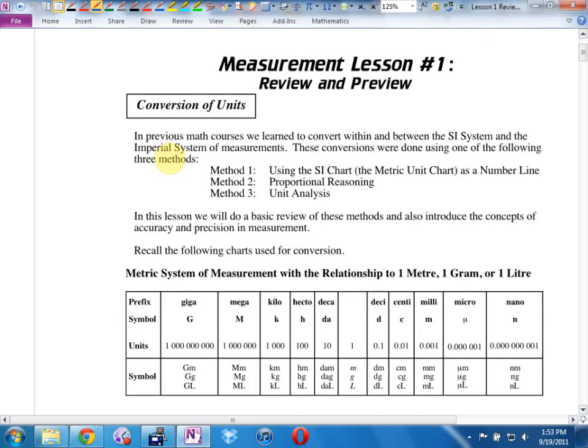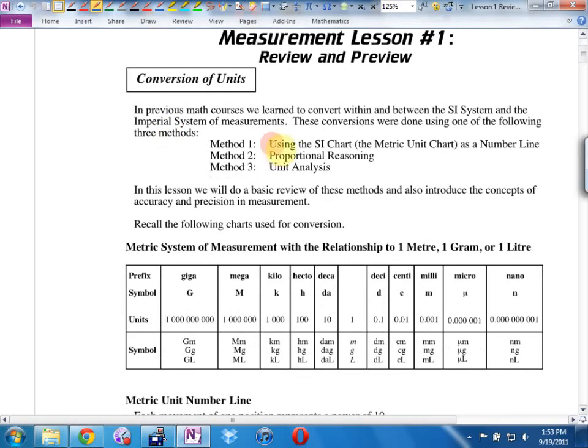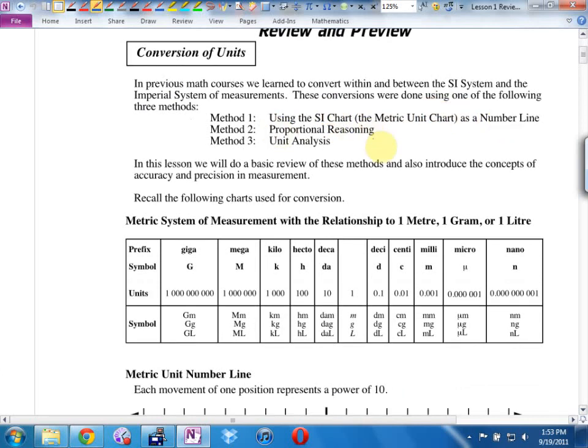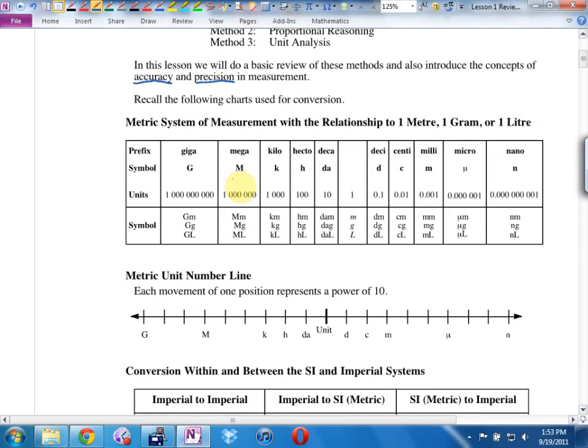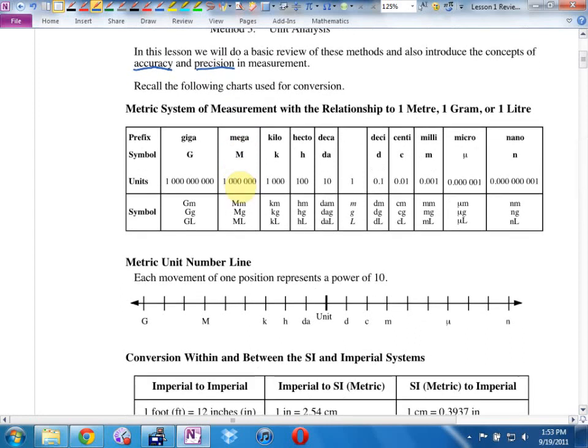You got three methods last year. Method one was using the SI chart as a number line. Method two was called proportional reasoning and method three was unit analysis. It says in this lesson we will do a basic review of these methods and also introduce the concept of accuracy. Let's all underline the word accuracy if you're planning on buying the book. And precision in measurement.